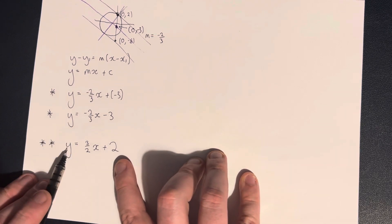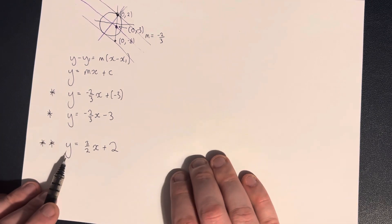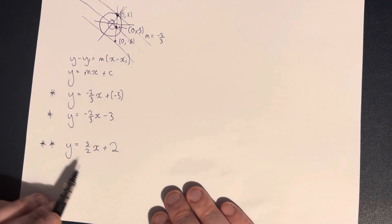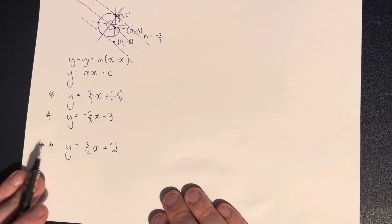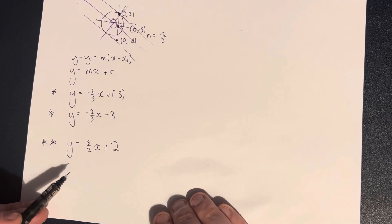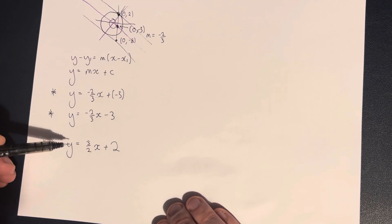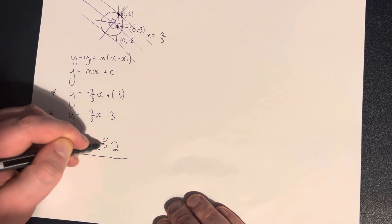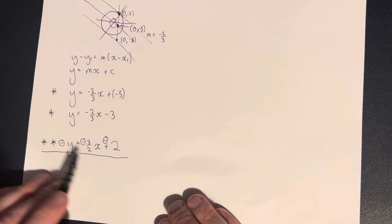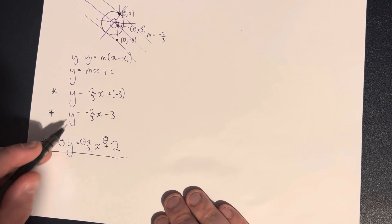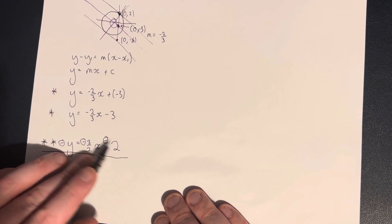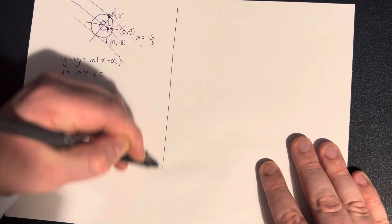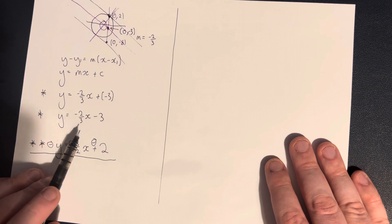So we have two equations, and we have two variables. We can now use simultaneous equations to find out where these two lines intersect. Where they intersect would obviously be the center. There's a number of ways of doing this. We could line them on top of each other and subtract the bottom line from the top line. But probably the easiest thing to do at this stage is to spot that y here equals this thing and y here equals this thing.